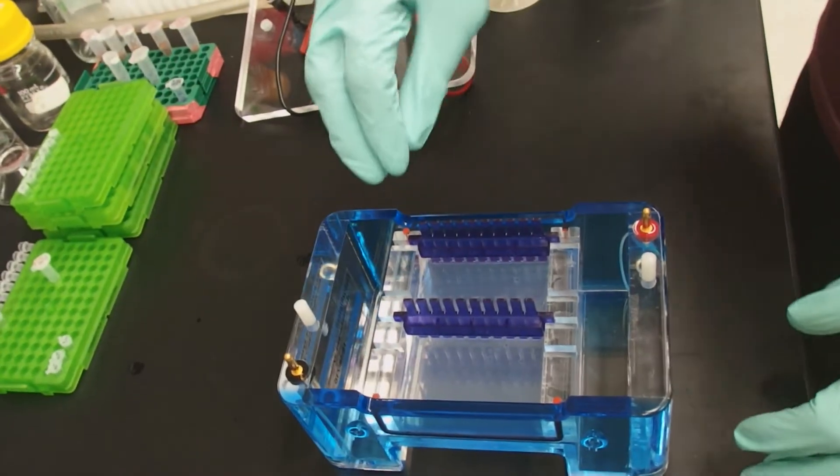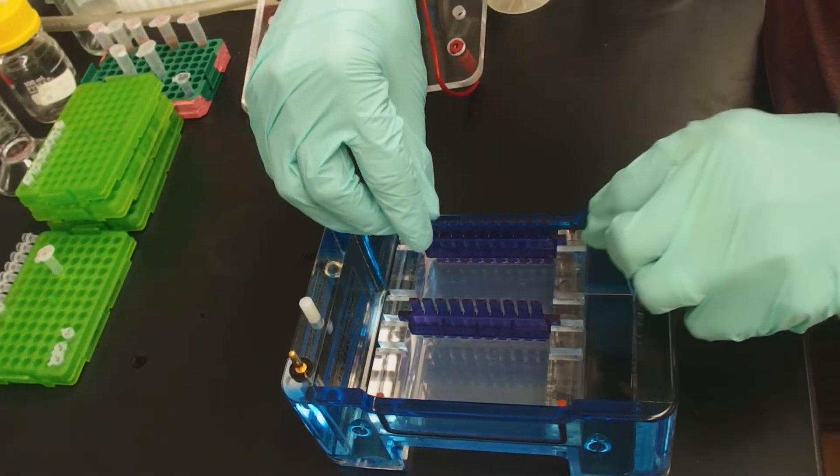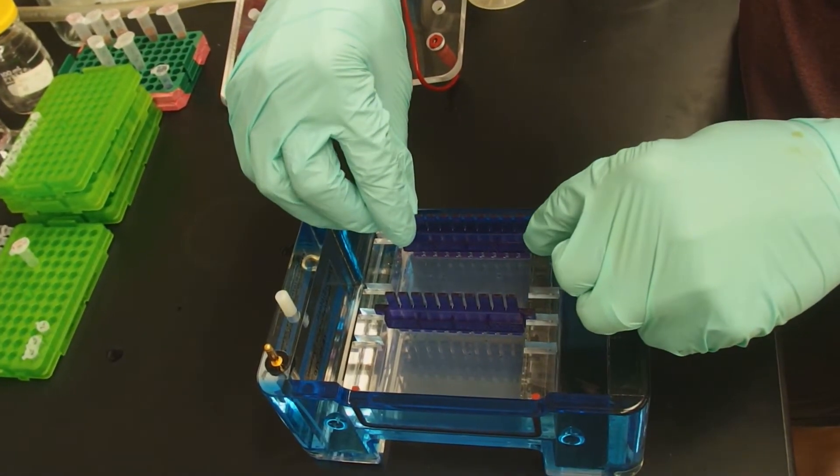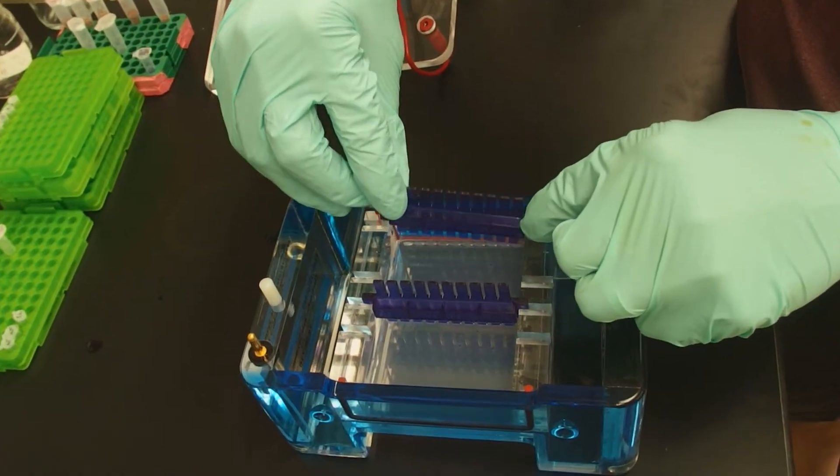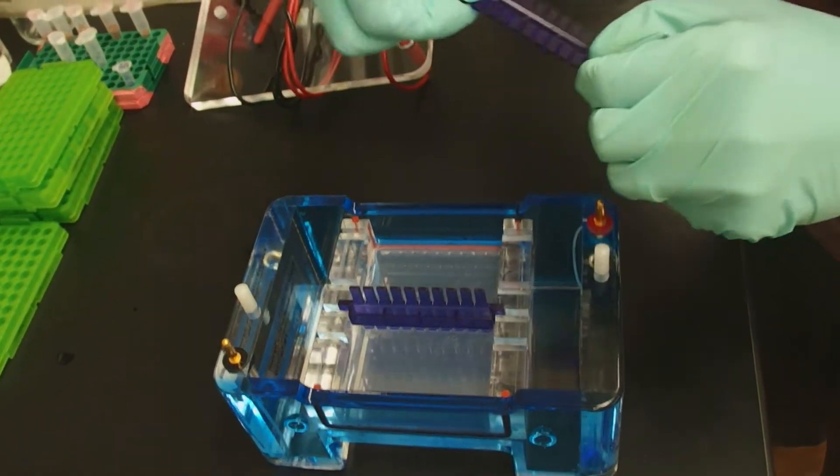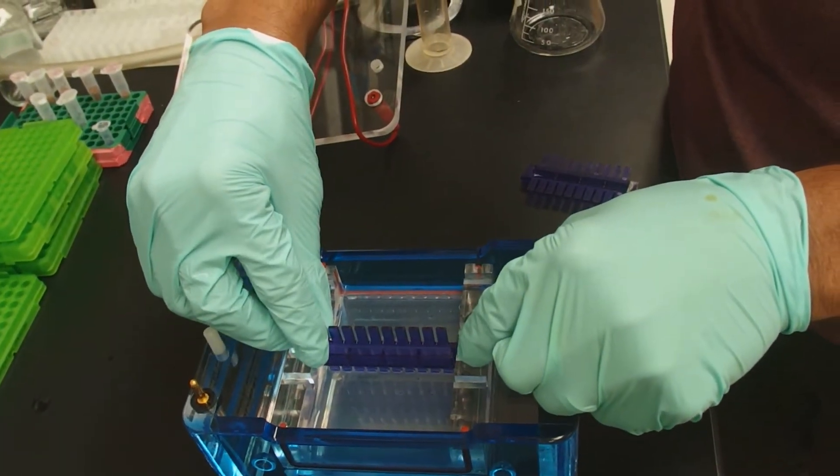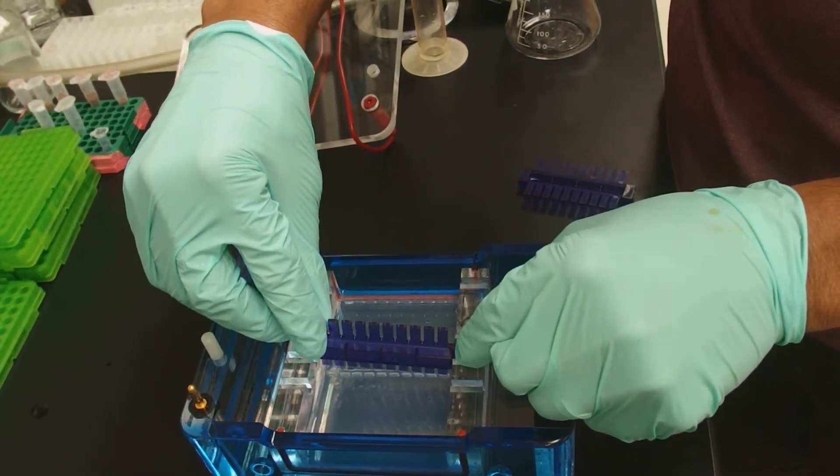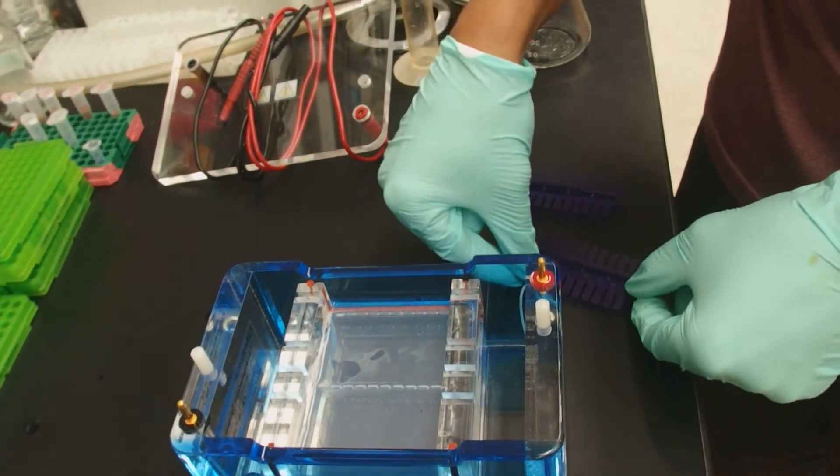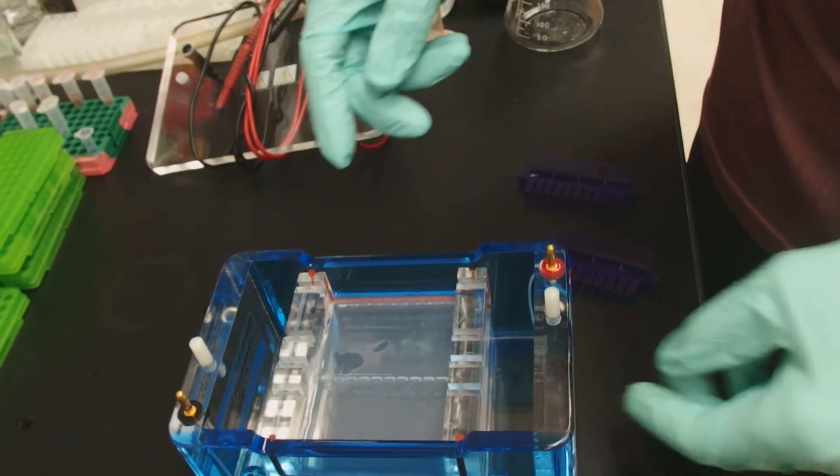We need to take our combs out, and the way we're going to do this is we're going to start on one end and raise it sort of like a drawbridge, so one end gets pulled out first. And you do this slowly and carefully. When you do it slowly like that, you won't tear the wells.